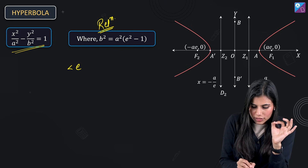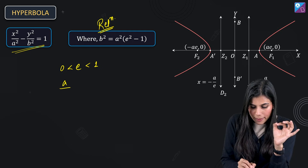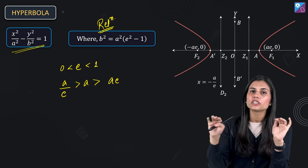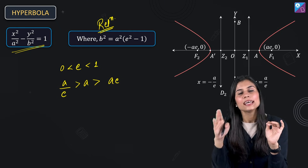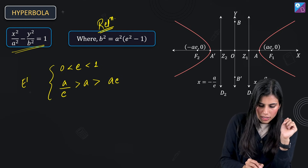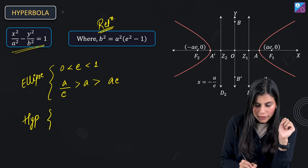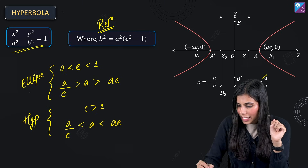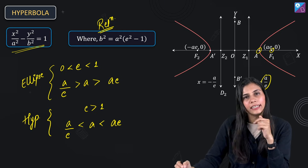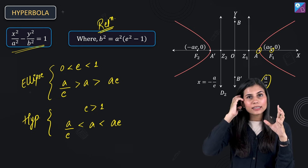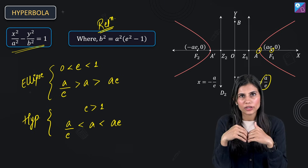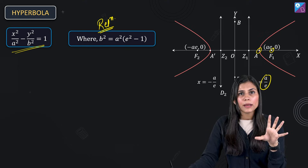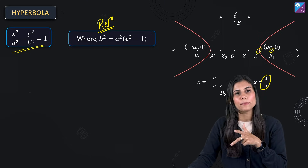In the case of ellipse, because eccentricity lies between 0 and 1, on the positive x-axis you first have the focus at ae, then the vertex at a, then the directrix at a/e — so a/e > a > ae. But for hyperbola, since e > 1, a/e < a < ae. So the directrix at a/e comes first, then the vertex at a, then the focus at ae. You don't have to memorize — just understand the relevance of e. Also, 2a is the length of the transverse axis and 2b is the length of the conjugate axis.